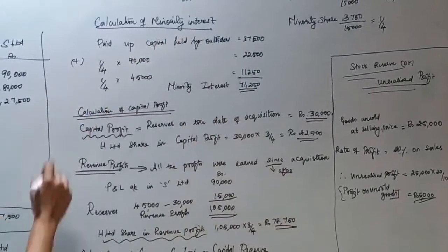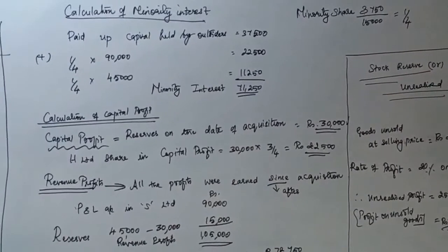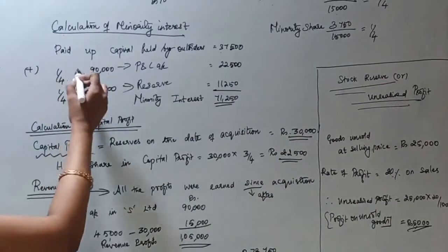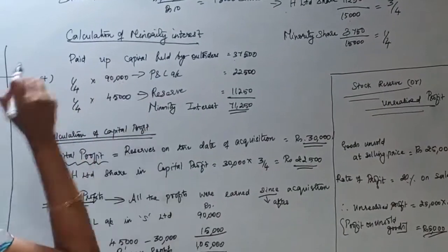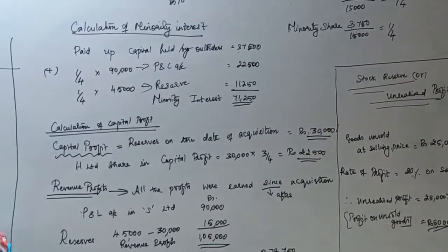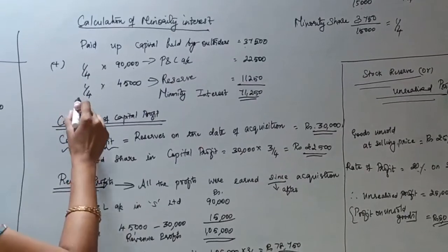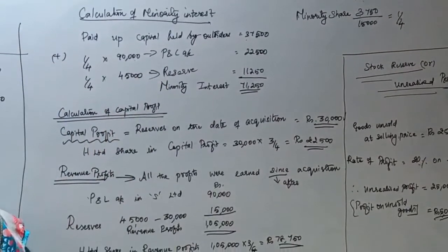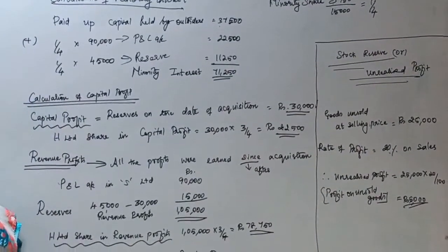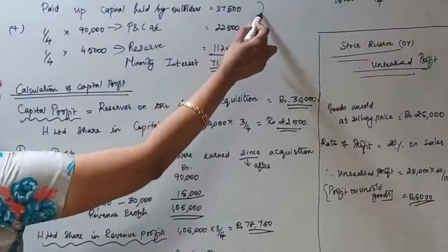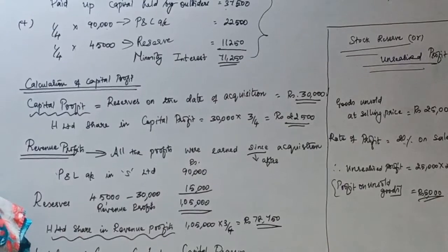Calculation of minority interest: First take the share capital held by outsiders. Then add minority share (one-fourth) in the profit and loss account of the subsidiary company: 90,000 × 1/4 = Rs.22,500. Add one-fourth of reserves in subsidiary company: 1/4 × 45,000 = Rs.11,250. Adding all three amounts, the total minority interest is Rs.71,250.